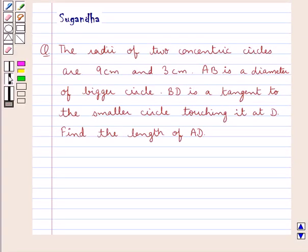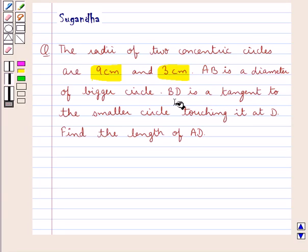Hello and welcome to the session. In this session we discuss the following question: the radii of two concentric circles are 9 cm and 3 cm. AB is a diameter of the bigger circle. BD is a tangent to the smaller circle touching it at D. Find the length of AD.